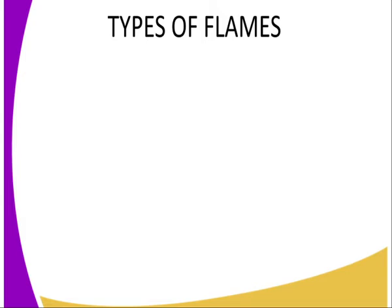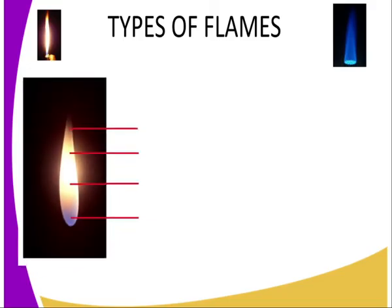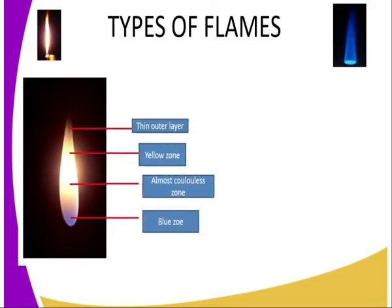The types of flames produced by the Bunsen burner are the luminous flame and the non-luminous flame. The luminous flame has four zones: the thin outer layer, which is blue and almost invisible due to complete combustion; the yellow zone, where partially burnt carbon particles glow giving the yellow color; the almost colorless zone, which contains almost unburnt gases — explaining why the inner matchstick did not burn; and the blue zone at the base where laboratory gas immediately contacts air and burns completely, making it the hottest part.